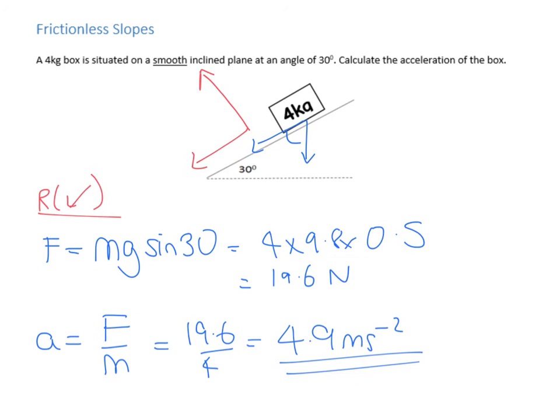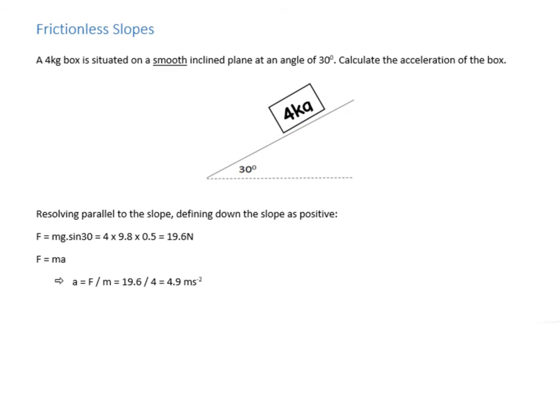Now, some of the more eagle-eyed amongst you might have spotted that here, we multiply by 4, or the mass, and then we divide it again afterwards. So you can do this in one step and just cross out the m's in both cases. So you can shorten it a little bit. But I just want to explain where it came from. So let's introduce some friction into this problem.